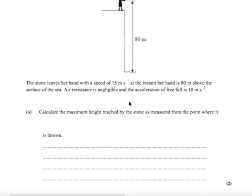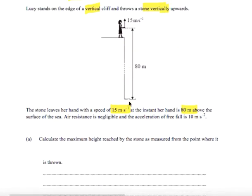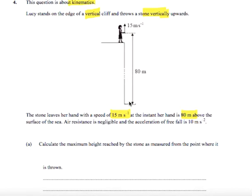So the stone leaves her hand with a speed of 15 meters per second at the instant her hand is 80 meters above the surface of the sea. So she throws the ball up here at an initial velocity of 15 meters per second. Meanwhile she's 80 meters above the sea.